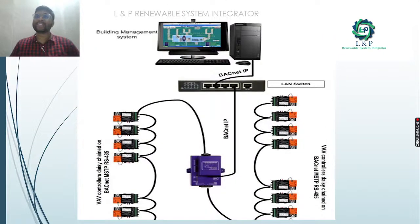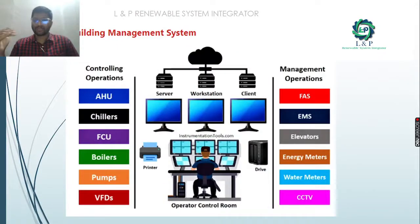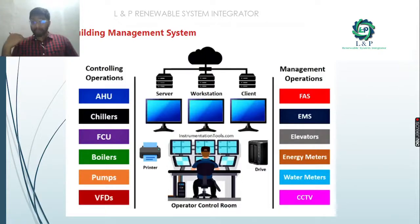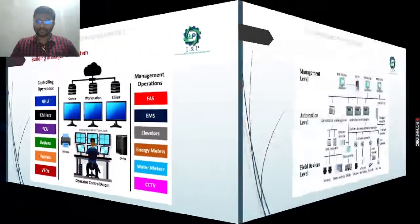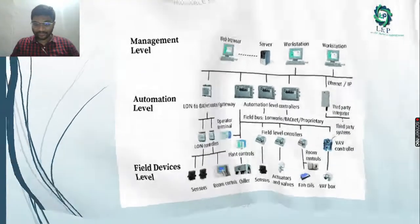This is a simple application showing how it is established in a building management system using BACnet IP with VAV field devices. A BMS includes a server, workstation, client, and operating control panel. You can perform control operations for air handling units, chillers, fan coil units, boilers, pumps, VFDs, fire alarm systems, escalators, elevators, energy meters, water meters, and CCTVs. The network is classified into three levels: management level, automation level, and field panel network. BACnet routers are needed between the field panel network and the automation network.